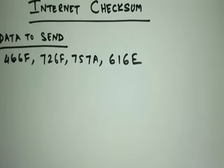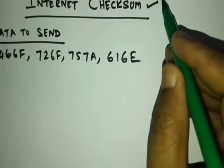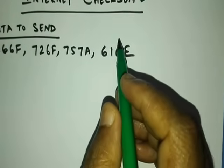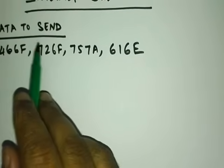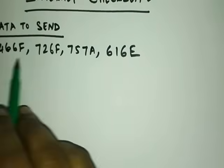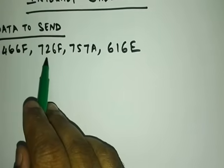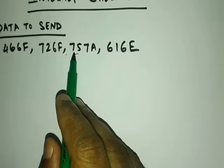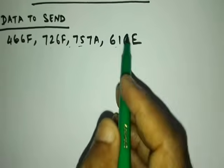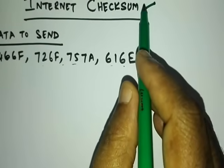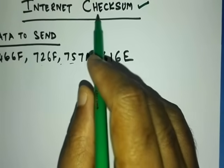Hi everyone. In this video I am going to tell you about internet checksum. This is one of the error detection algorithms, and we have data to send in hexadecimal: 466f 726f 757a 616e. We will see how we find the error using internet checksum.